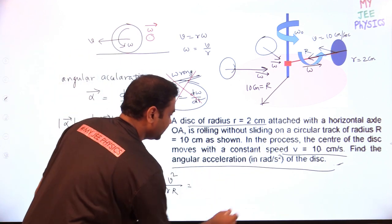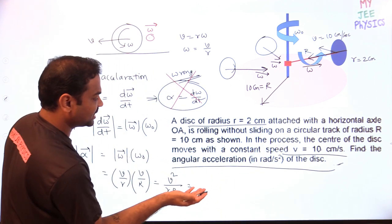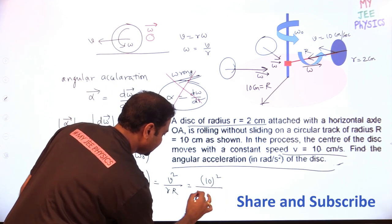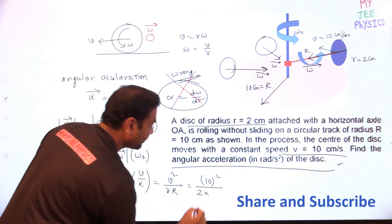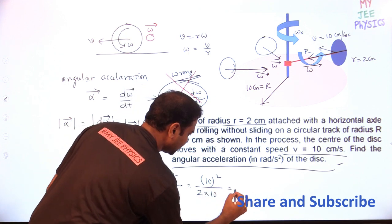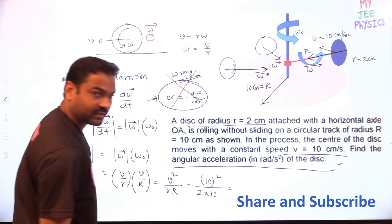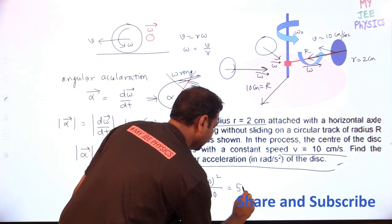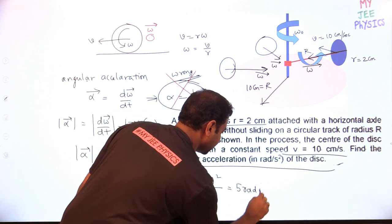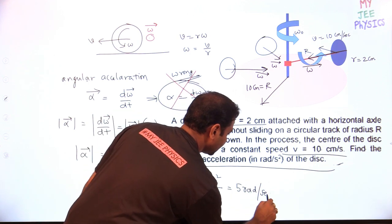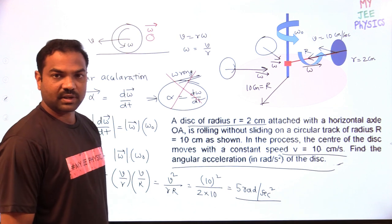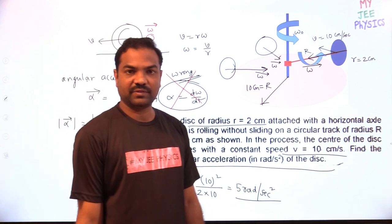Substituting the values — all in centimeters — V = 10, r = 2, R = 10: alpha = 10² / (2 × 10) = 100/20 = 5 radians per second squared. So the angular acceleration of the disc is 5 rad/s². Hope your answer matched. Please go through the video again if needed.